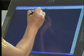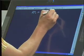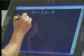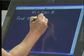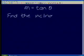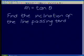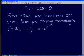What do we have that we can use? We have that m equals tan theta. The question says find the inclination of the line passing through (-2, -2) and (3, 4).